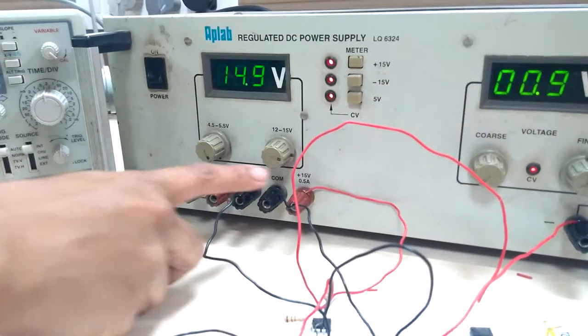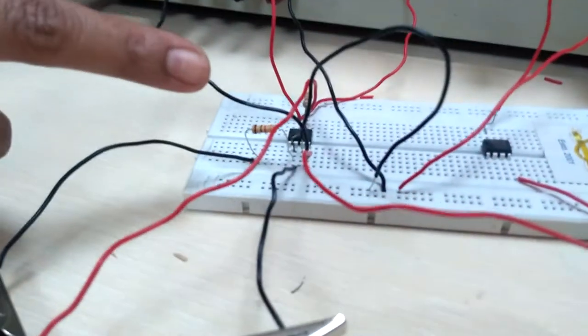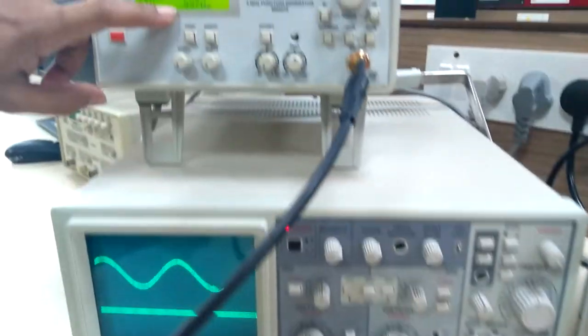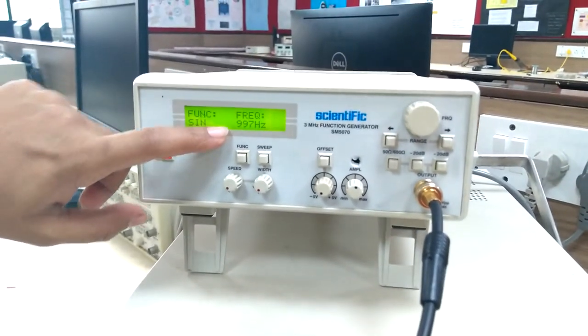Common and plus 15 minus 15 are given to pin number 7 and 4. Set input of 1 kilohertz, 1 volt peak to peak.